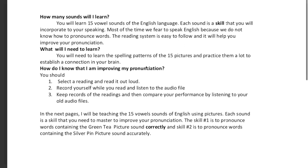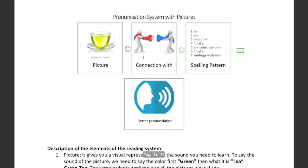How many sounds will I learn? In this occasion I'm going to be introducing only two sounds: the green T-E, which is the long E of English, and the silver pen, which is the short A of English — two vowels only. I hope you have understood the basics of the system, which is establishing a connection between the picture and the patterns. Once students have established that connection, their pronunciation is going to be way better. This is my hypothesis in regards to the system.